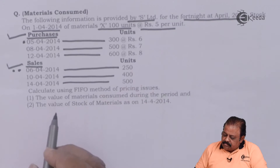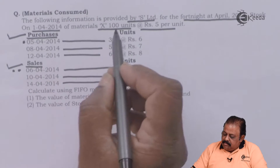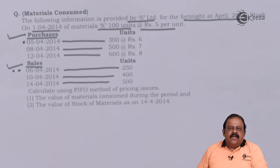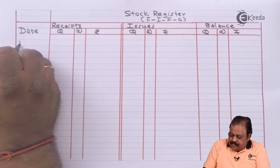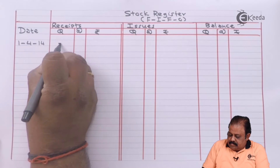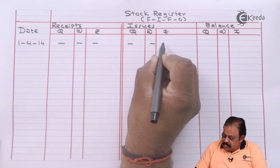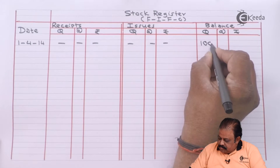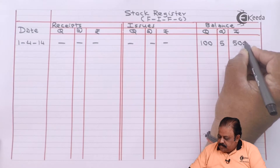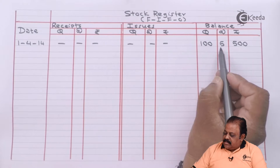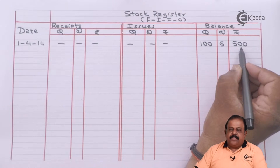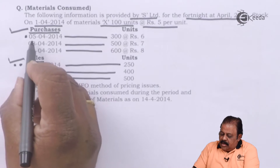Opening balance: 1st April 2014 — 100 units of Material X at the rate of Rs.5 per unit. The value of opening stock is Rs.500.